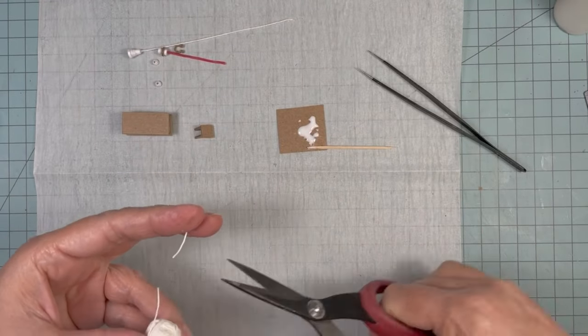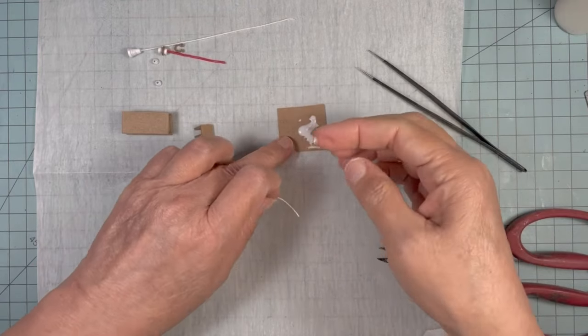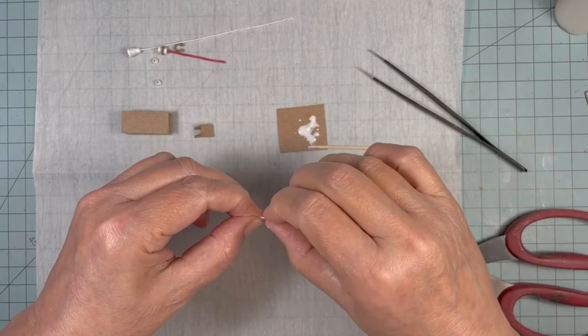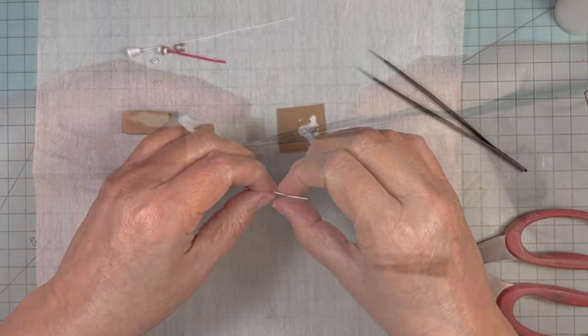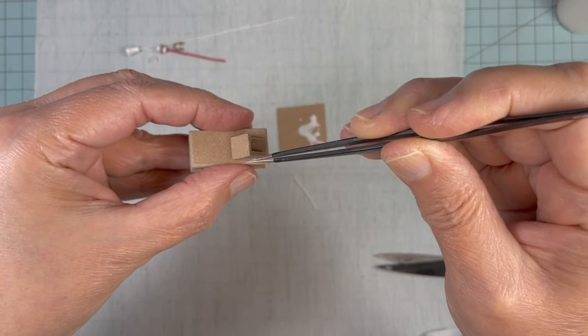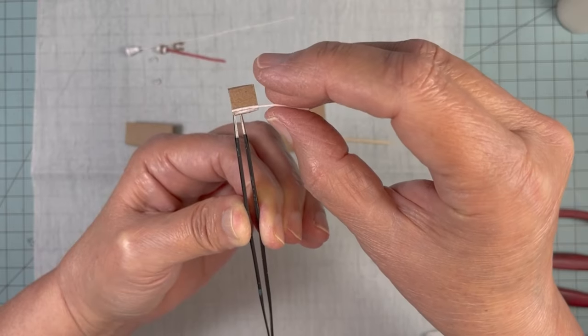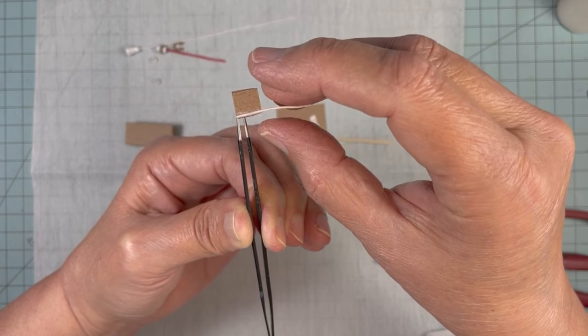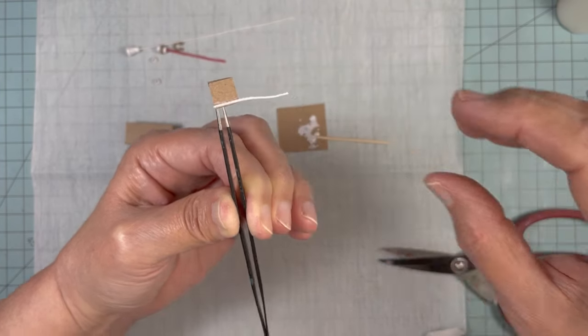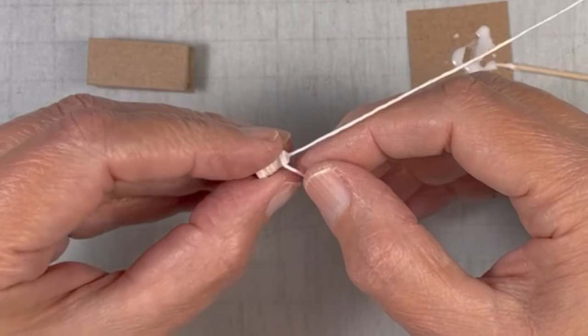This little piece of crochet thread I'm just going to glue to the edge of the little table top to look kind of like a little lip to hold the little notepad. I'm not making a notepad in this video, but I've noticed in a lot of the old pictures that they have the little notepad sitting on it.